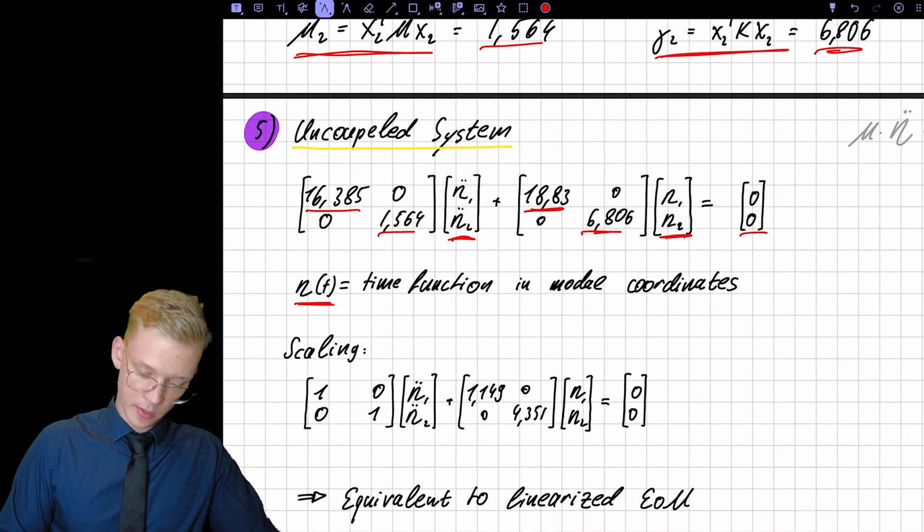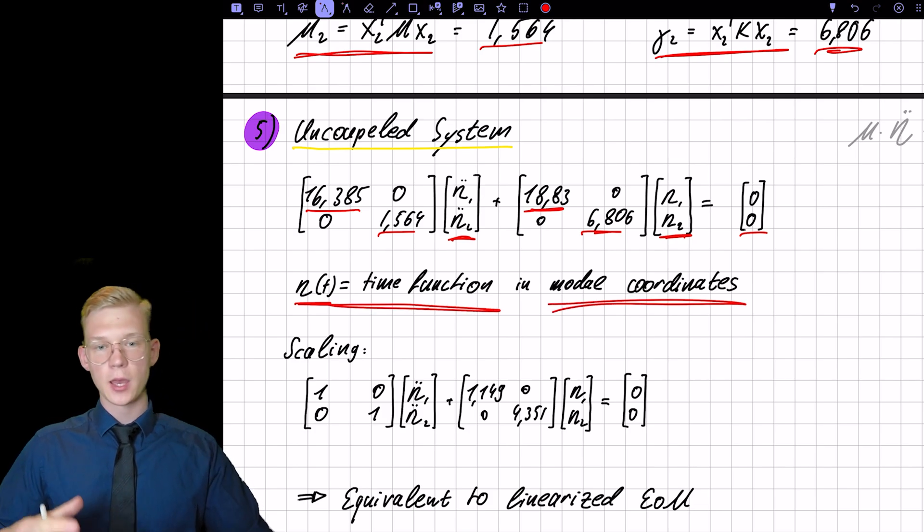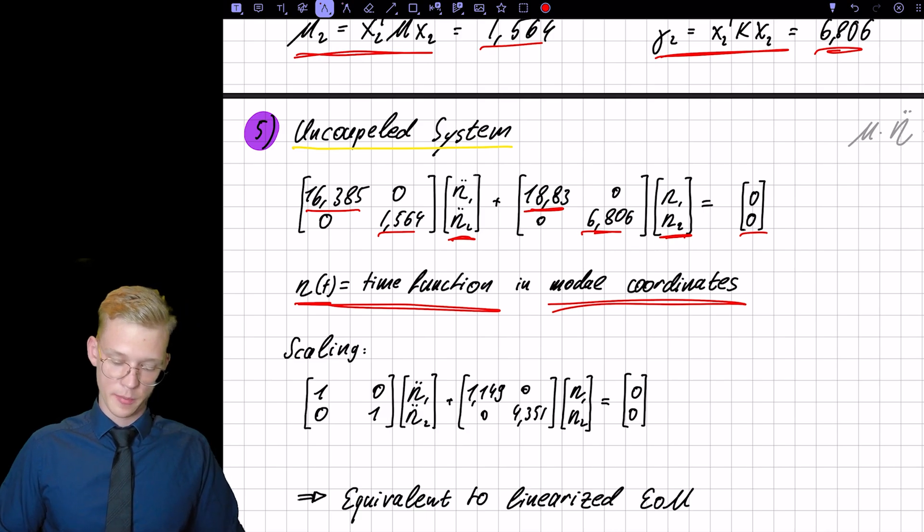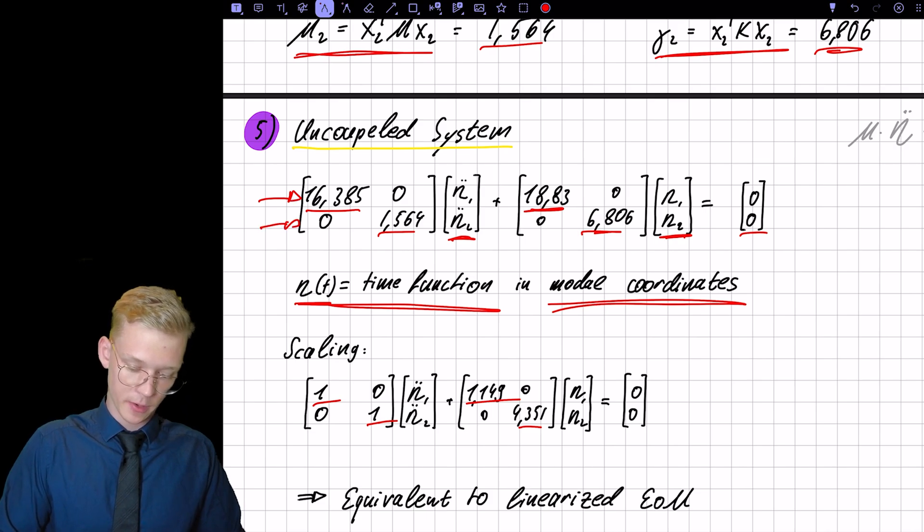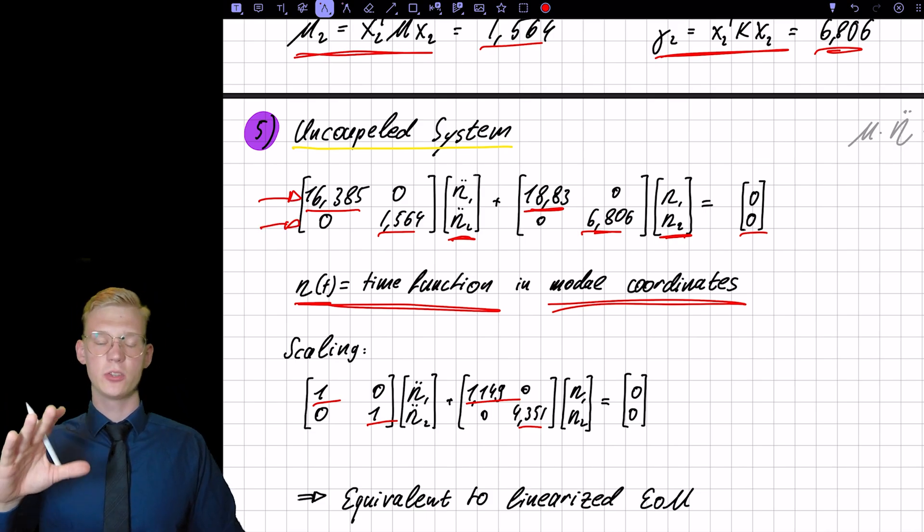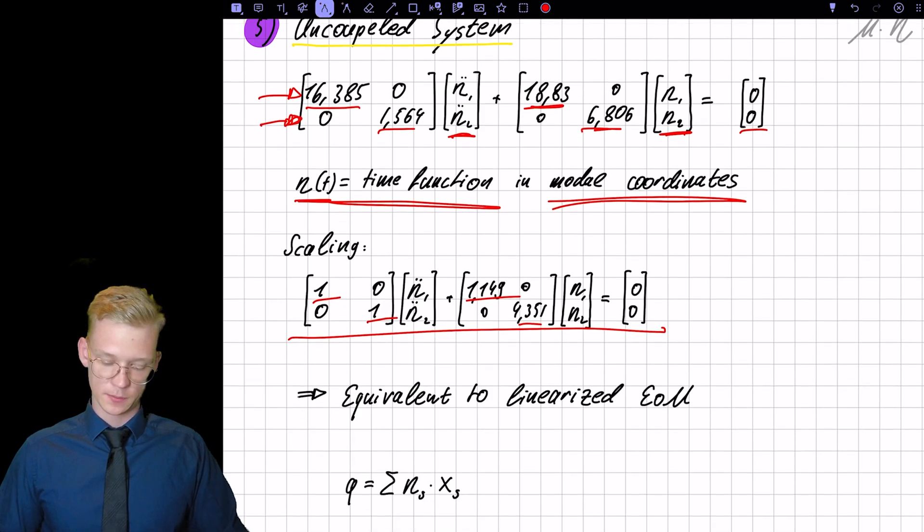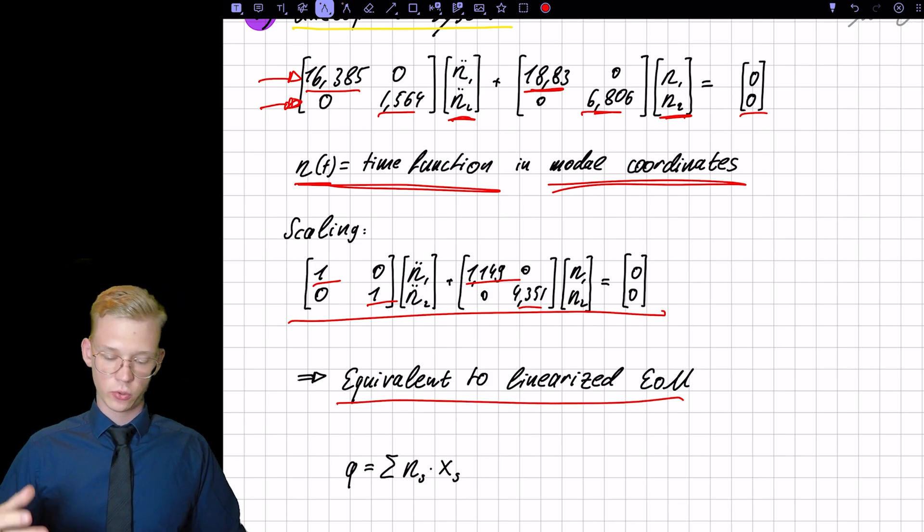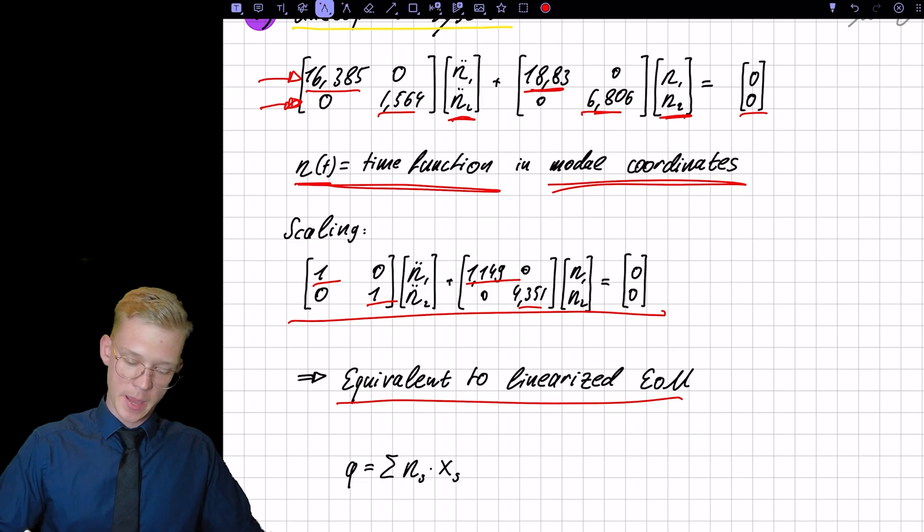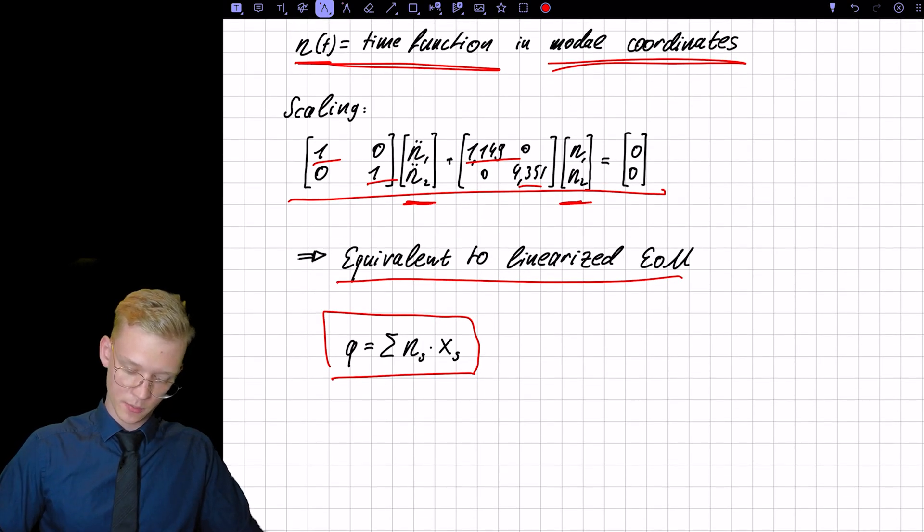So now we have these time functions in the modal coordinates. We also can scale them by the modal mass. So basically just divide each row by 16 or 1.5. And we will get this solution. So this will be equivalent to the linearized equations of motion. And after we solve our etas, we will just insert them in this solution, because we know the etas, and we know our eigenmodes, we will get the solution in the physical space. We will cover this in another exercise.